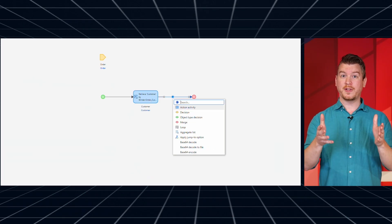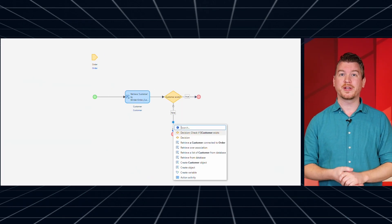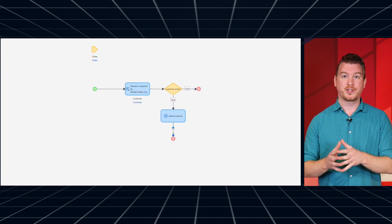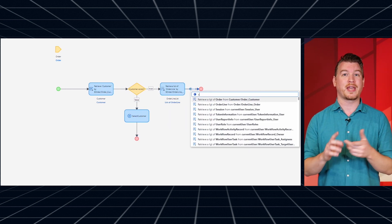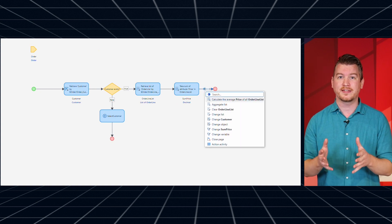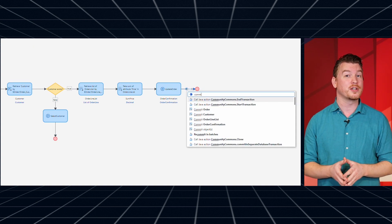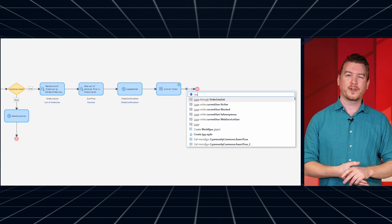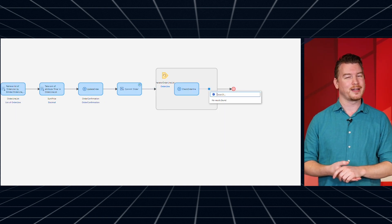The improved Microflow and Nanoflow editors were released in beta in Studio Pro 10.4. Thanks to your feedback, the release in 10.6 incorporates even more improvements, ranging from additional Logic Bot suggestions, to directly using count, sum, and other activities on lists, to automatic loop resizing when adding new activities. Oh, and we fixed a handful of bugs as well. Enjoy this little holiday present.